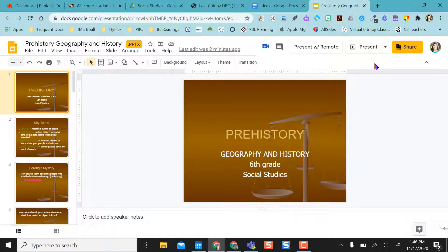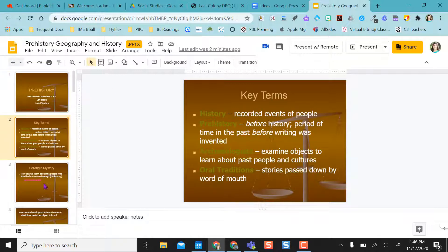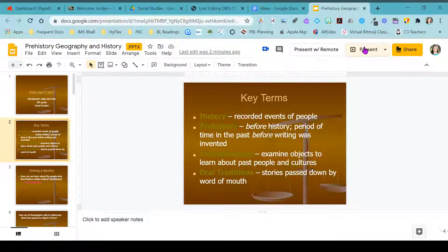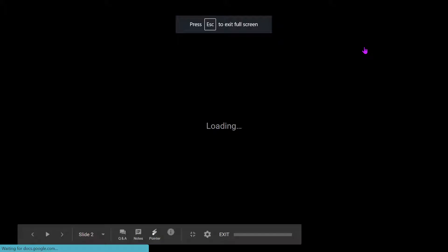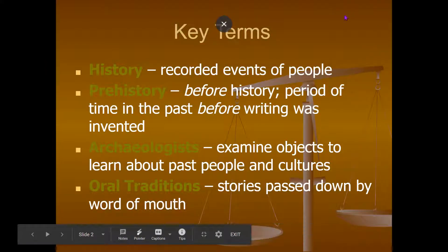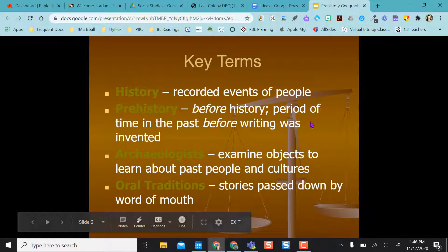Right now I'm in a Google Slides presentation, and maybe I'm teaching and I want to annotate something on this slide. So I can go into present mode. As you can see, I'm missing my toolbar, but if I come down to the menu bar and select Exit Full Screen, I'm still in present mode but it gives me my toolbar up here.